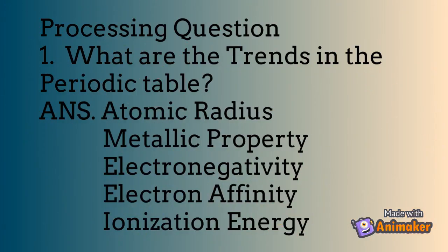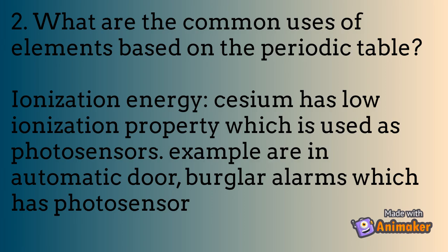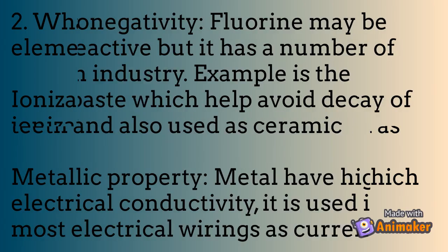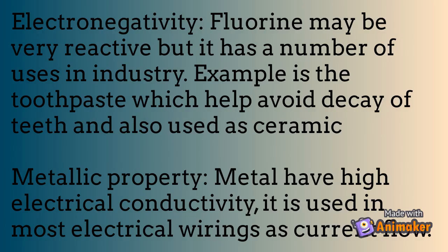Processing question one: What are the trends in the periodic table? Answer: atomic radius, metallic property, electronegativity, electron affinity, and ionization energy. Question two: What are the common uses of elements based on the periodic trends? Cesium has low ionization energy and is used as a photosensor — examples include automatic doors and burglar alarms. Chlorine, despite being very reactive, has uses in industry such as toothpaste to help avoid tooth decay and in ceramics. Metals have high electrical conductivity and are used in electrical wiring.